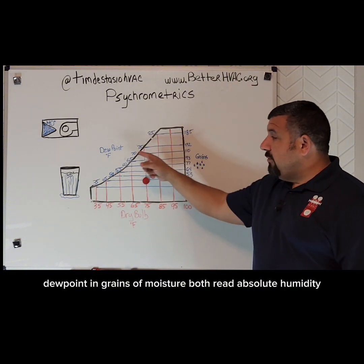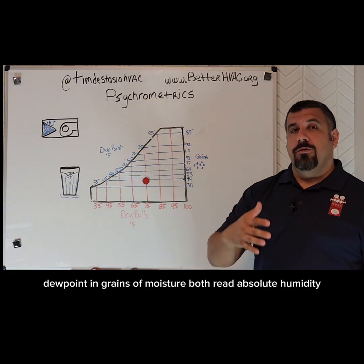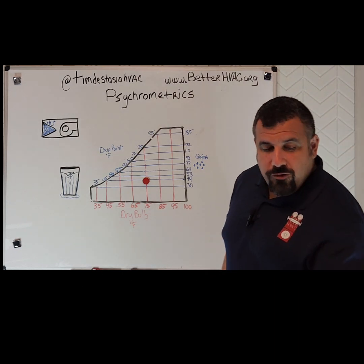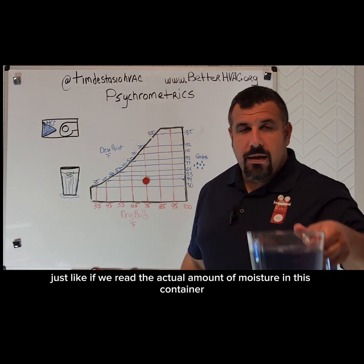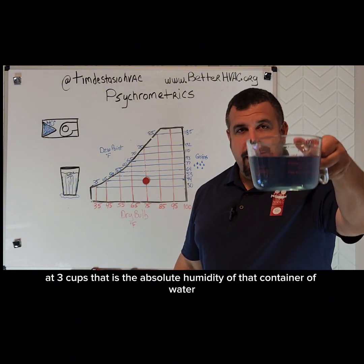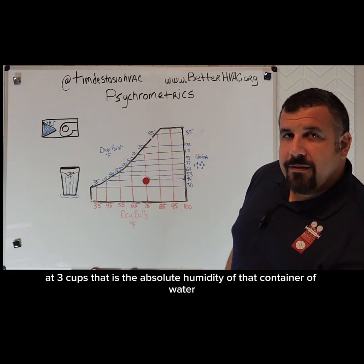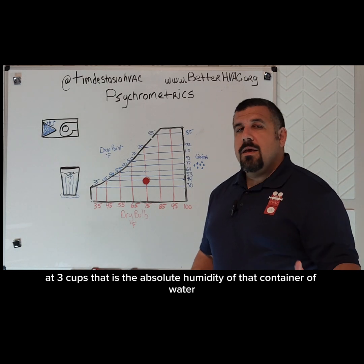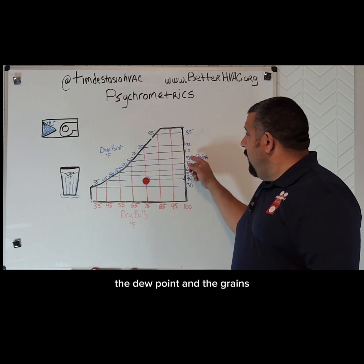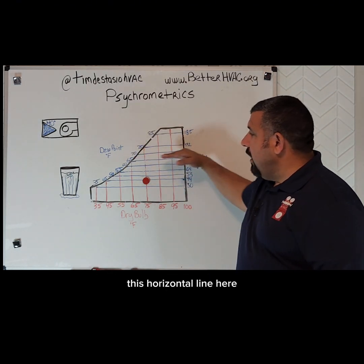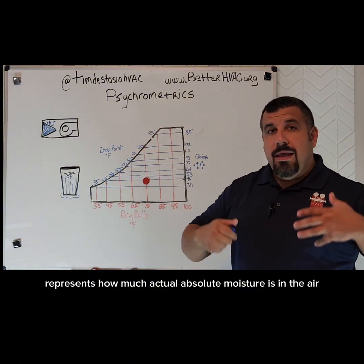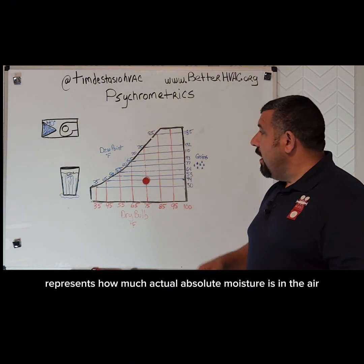Dew point and grains of moisture both read absolute humidity. So that's the actual moisture in the air, just like if we read the actual amount of moisture in this container at three cups — that is the absolute humidity of that container of water. The dew point and the grains, this horizontal line here, wherever it is, represents how much actual absolute moisture is in the air.